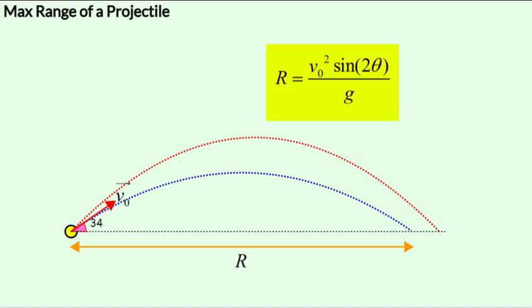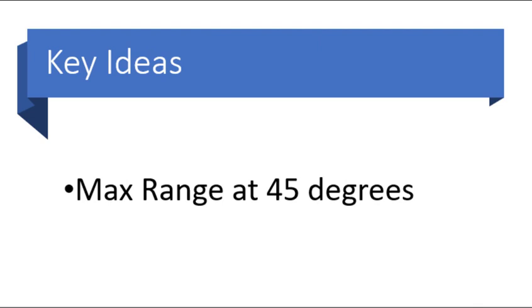So, as per the equation, we would get the maximum range when theta is 45. To obtain the maximum range for a given initial speed, we would have to launch the projectile at 45 degrees.